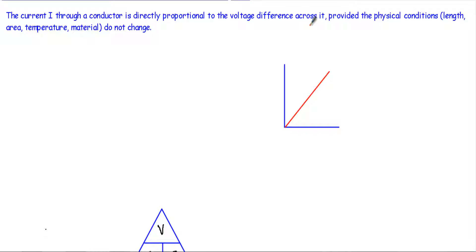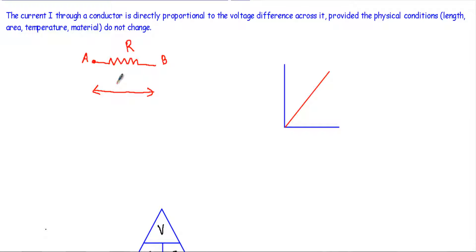Let's say I have a resistor with value R. This is terminal A and this is terminal B. With respect to the AB terminals, I have applied a constant voltage V. This terminal is at higher potential and this terminal is at lower potential. As a result, I will get a current flow through this resistor. Ohm's law states that the current through this resistor R will be directly proportional to the voltage difference across the A and B terminals.